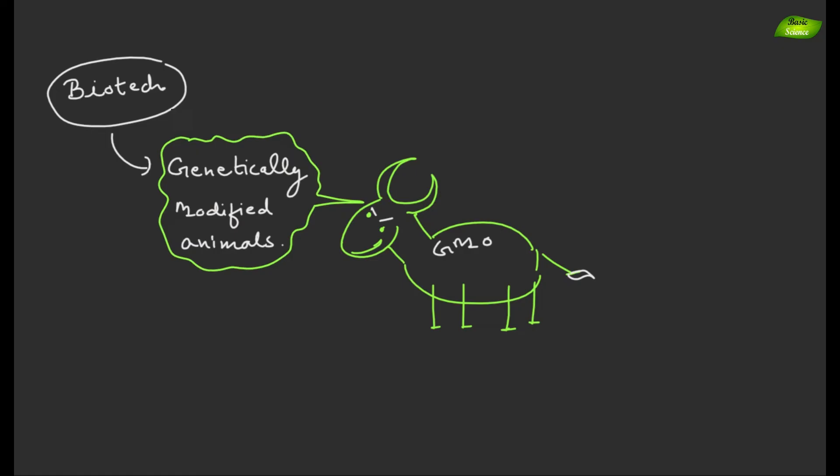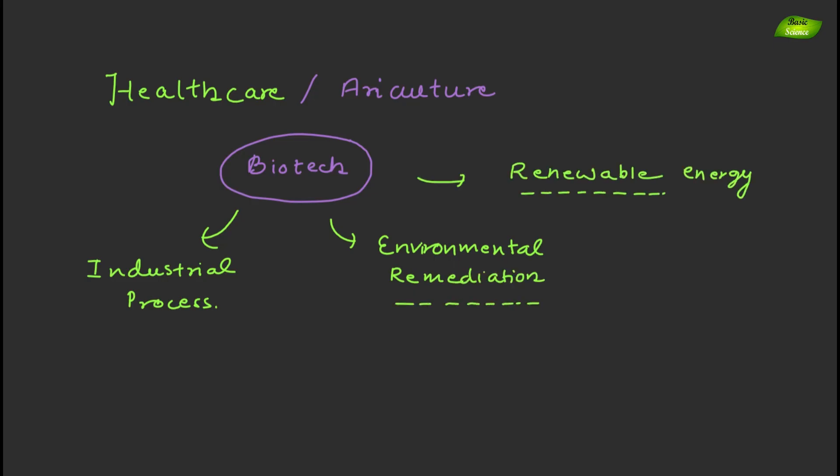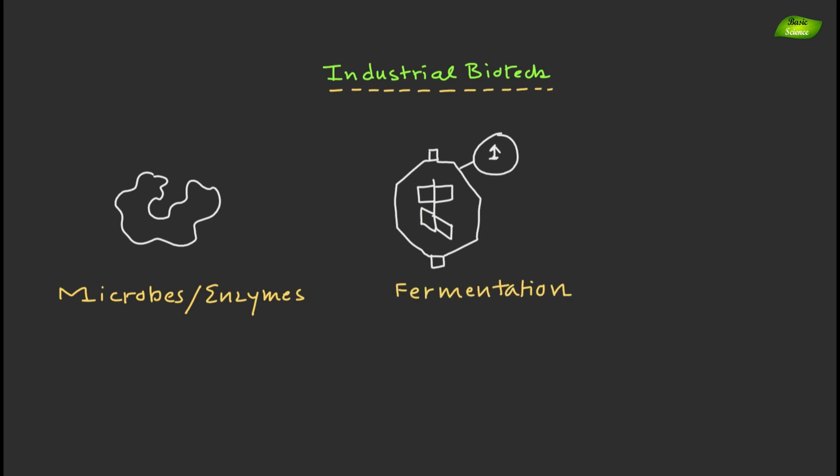Biotechnology also enables the development of genetically modified animals with desirable traits such as increased disease resistance or faster growth rates to improve livestock productivity and sustainability. Beyond healthcare and agriculture, biotechnology has applications in industrial processes, environmental bioremediation and renewable energy production.